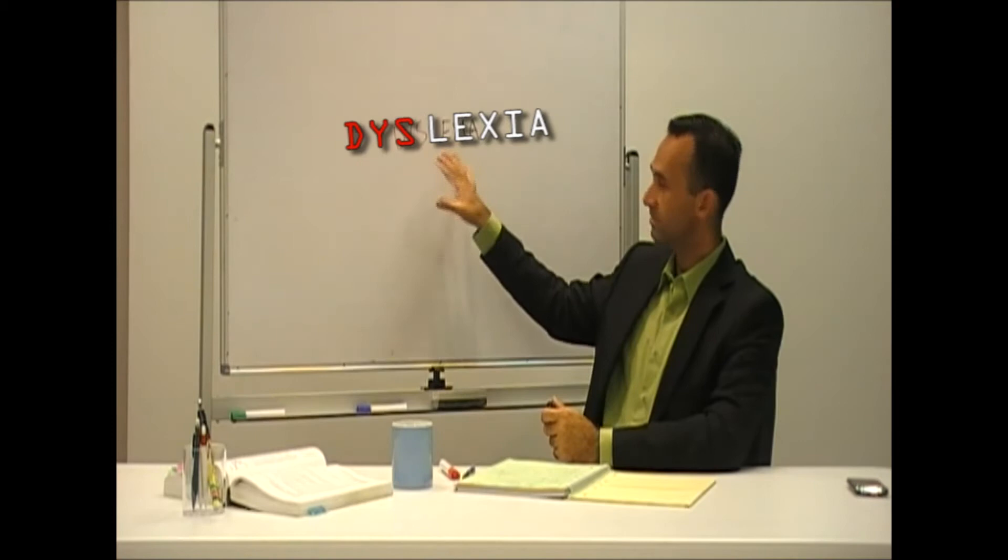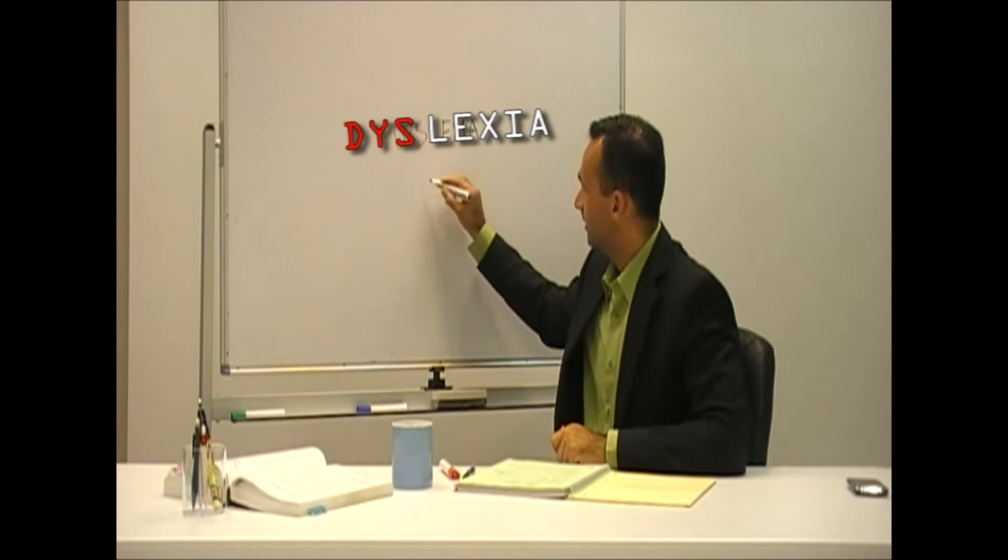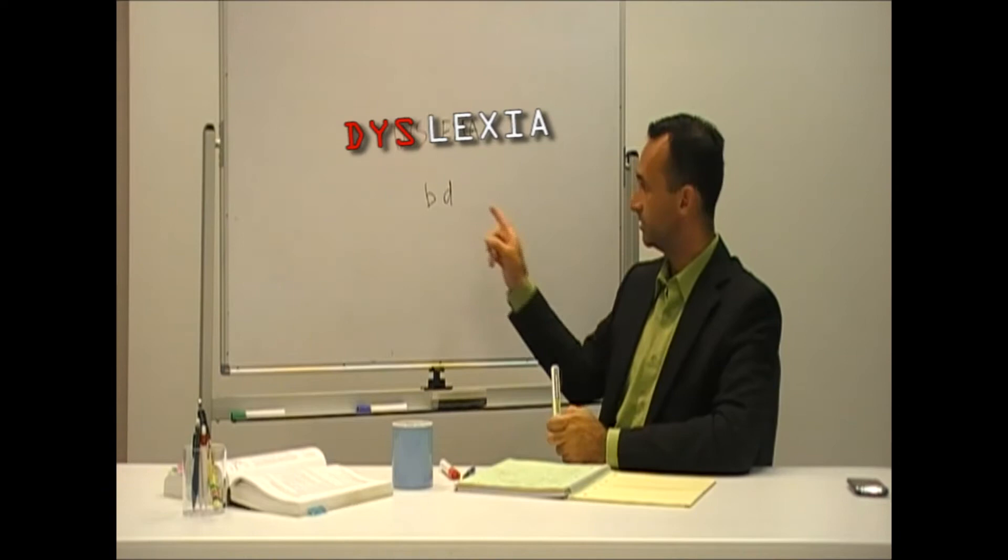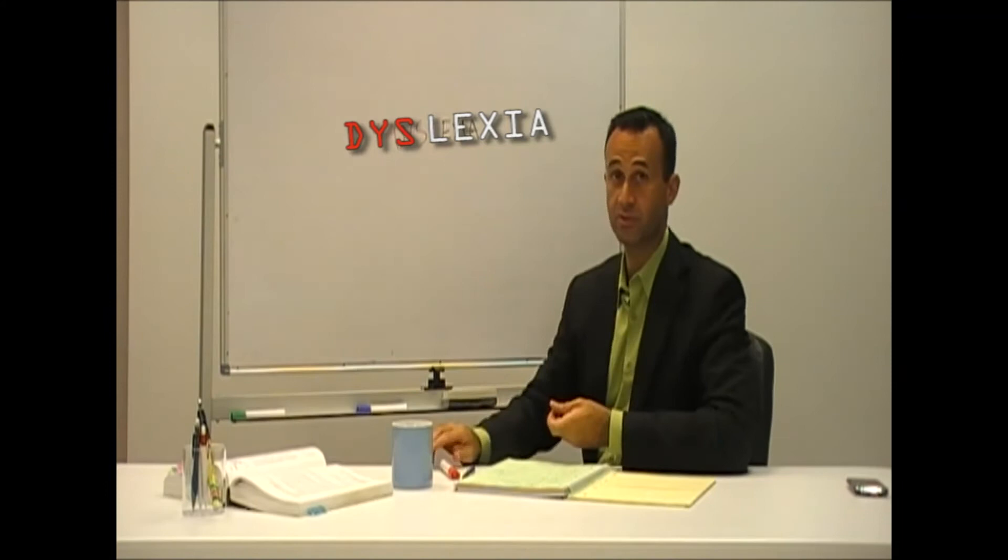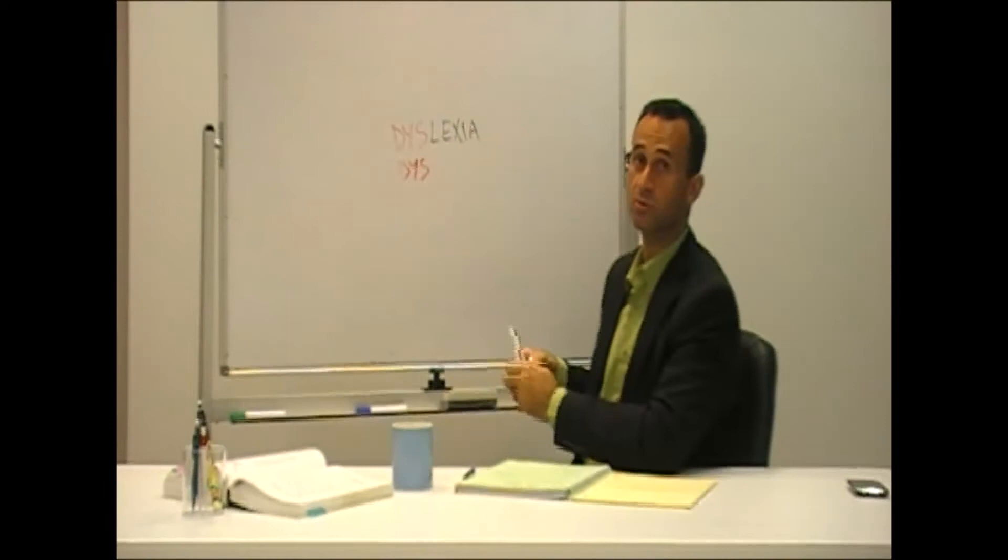A lot of people say they have dyslexia because when they write, they sometimes write a B instead of a D. Now, if the trouble exists only in writing, it's not dyslexia. It's a different disorder, also starting with 'dys.'